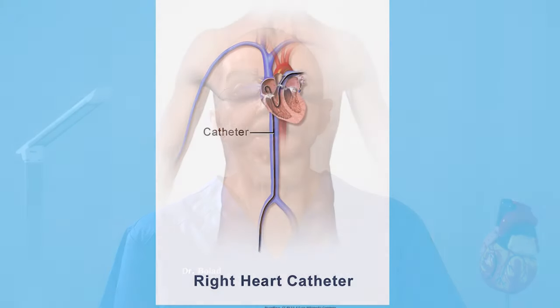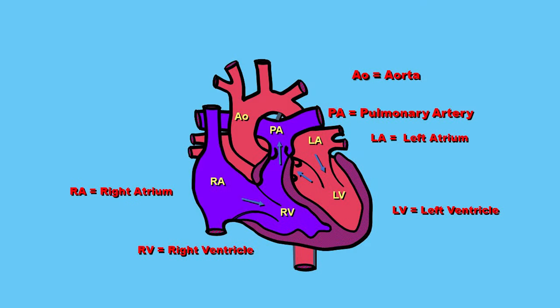This is the passage of a catheter to measure pressure and oxygen saturations in the right heart chambers. When you hear the word cardiac catheterization, this generally refers to left heart catheterization in which catheters are passed to the left side of the heart to evaluate left heart pressures and look into the coronary arteries. Right heart catheterization is strictly evaluating the right side of the heart, as shown in the image on the left side of the screen, evaluating the right atrium, the right ventricle, and the pulmonary arteries — all colored purple in this image.